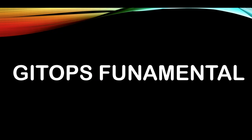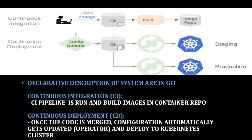Here's the GitOps fundamental: a diagram showing a clear separation between continuous integration and continuous deployment. The system state is declared in Git. Continuous integration's main job is to run the pipeline when a developer checks in code and builds images to a container or image registry repo. Then the continuous deployment stage takes over — code is merged, an updater is configured, and it's automatically updated using a Kubernetes operator and deployed to the Kubernetes cluster, using Git throughout the process.